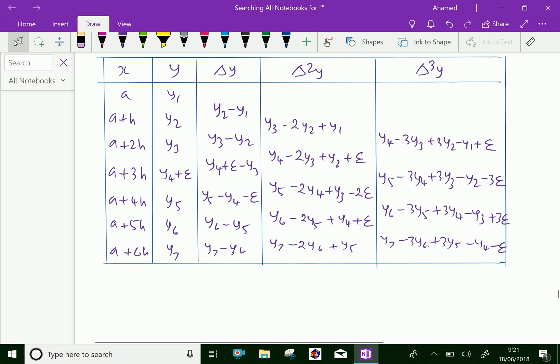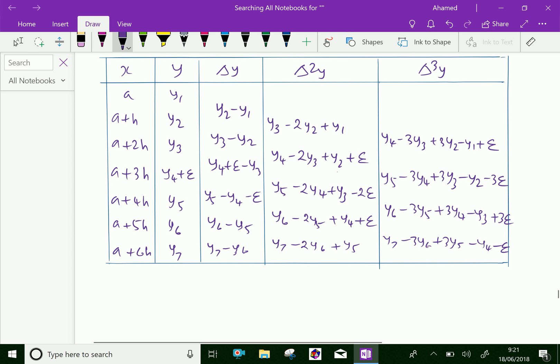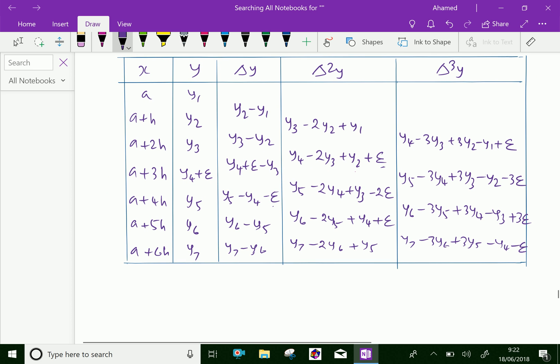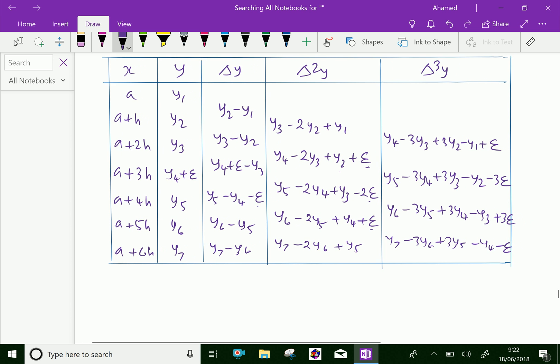For delta f of 2h it is positive 1. The coefficient is here minus 1, and in delta square f of a plus h the coefficient is plus 1 and minus 2. In delta cube, the third difference, the coefficients are 1, minus 3, plus 3, and minus 1.